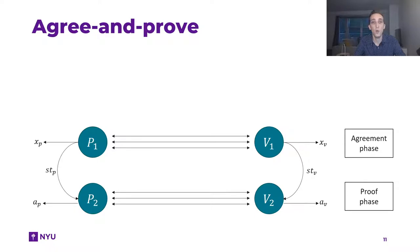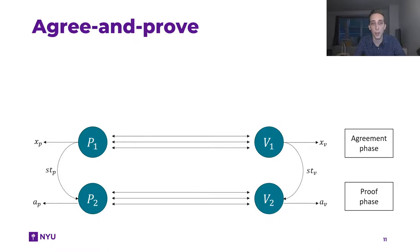An agree-and-prove protocol is essentially a four-tuple of protocols where both the prover and the verifier are split into two phases. In the first phase — the so-called agreement phase — the first prover interacts with the first verifier, and at the end they both output a statement X as well as a state for the second phase. In the second phase, the proof phase, they use the state to execute the actual proof, ending with both parties outputting a bit indicating whether the proof succeeded.